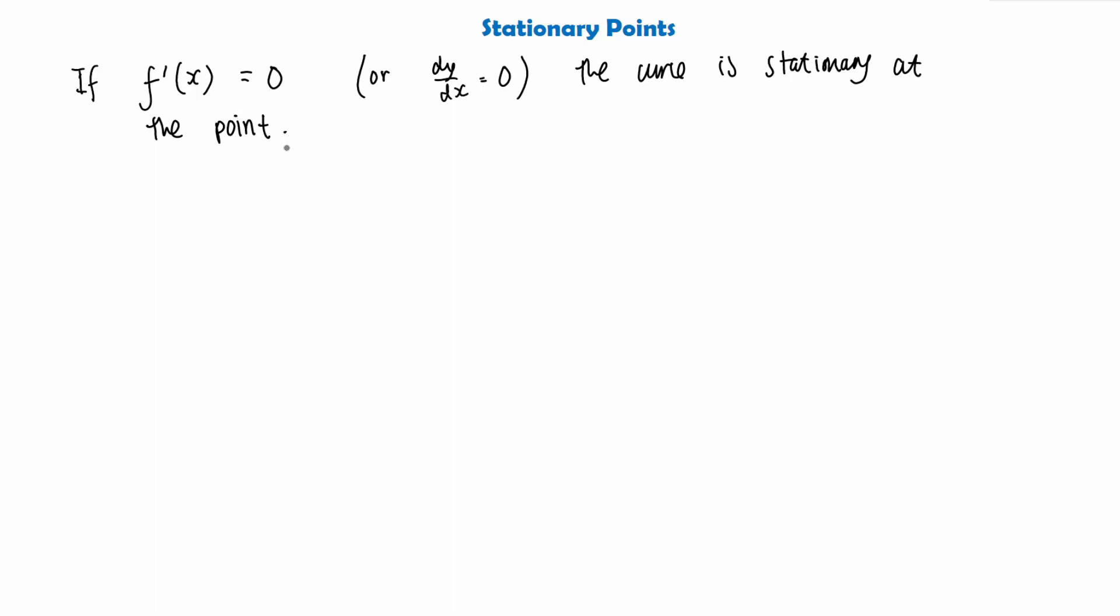We can work out the gradient of the tangent to the curve because it will simply just be 0. So we can solve by finding f'(x) = 0, and I'll show you what we mean by this.